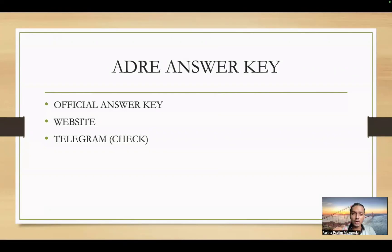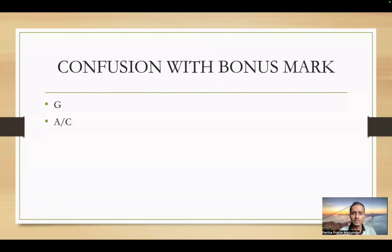Regarding bonus marks: if a question has bonus marks, there is some confusion. If you attempted it and got 0.25 marks negative, the wrong answer effectively costs 0.25 marks. There is confusion about whether bonus marks apply when an answer is wrong. For an English section question worth 2 marks with 0.5 negative, if you answered incorrectly you lose 2.5 marks total. Keep this calculation in mind.